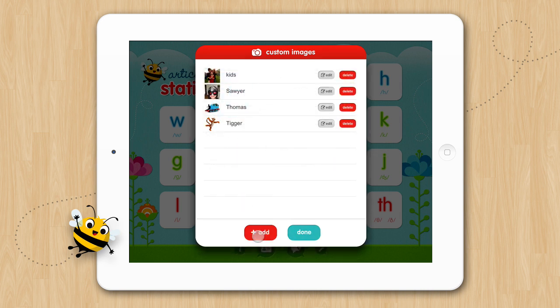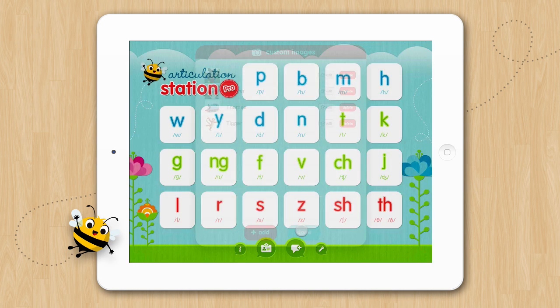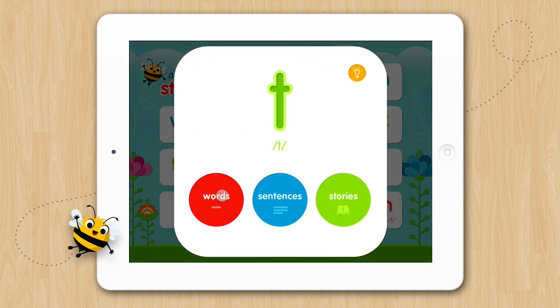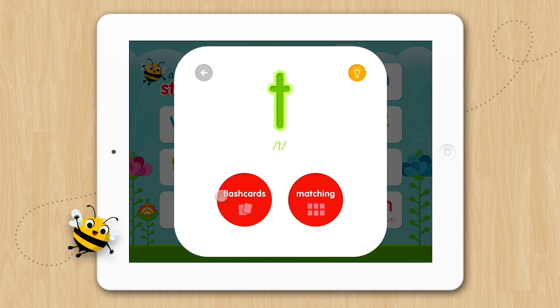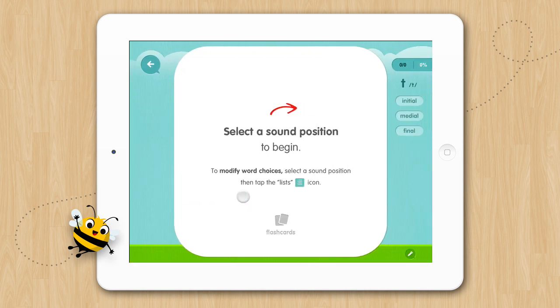Now that we have added our new image, let's go look at it in the Activities. Let's look at it in Words first. We'll go to T, Words, and this image will appear in Flashcards and Matching. We'll look at it in Flashcards in the Initial position.